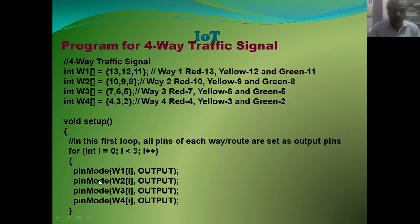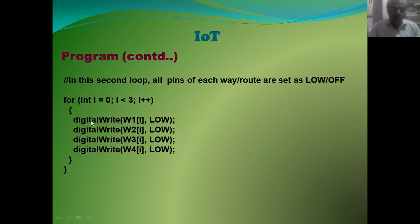In the second loop of void setup, all pins of each way or root are set as low or off using digitalWrite: w1[i], w2[i], w3[i], w4[i] set to LOW, where i varies from 0 to 2.